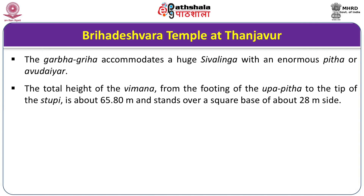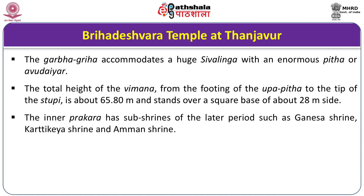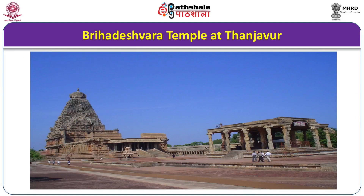The total height of the Vimana from the base of the Upapita to the tip of the Stupi — the Kalasa — is about 65.80 meters and it stands over a square base of about 20 meters per side. The inner Prakara has sub-shrines of the later period, such as the Ganesha and Kartikeya shrine and also the Amman Shrine, which was introduced during the Vijayanagara times. There is a flight of steps approaching from the east, and on the front there is a Mandapa-like addition from the Vijayanagara period.